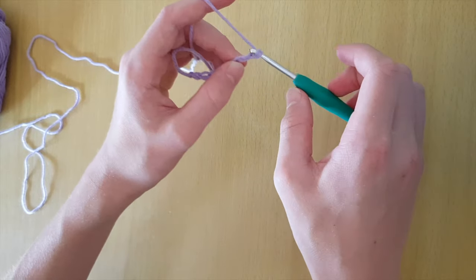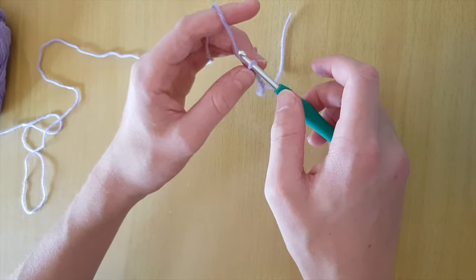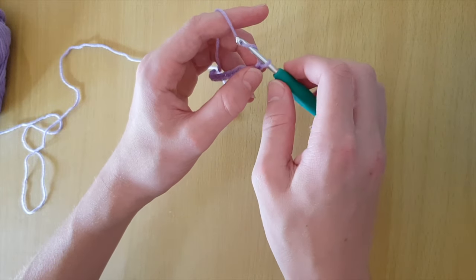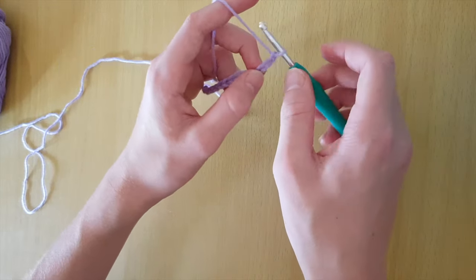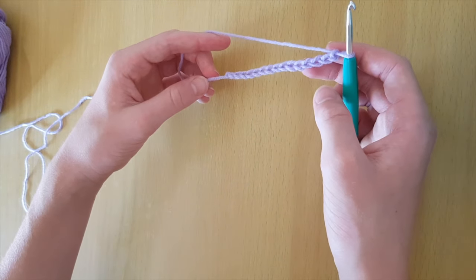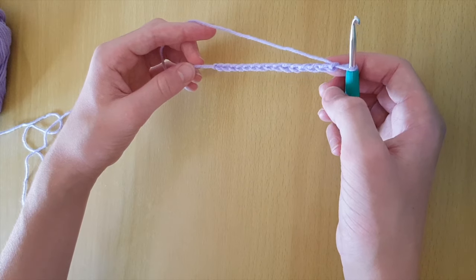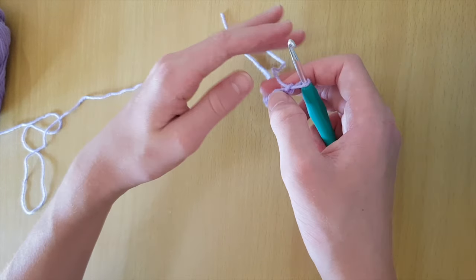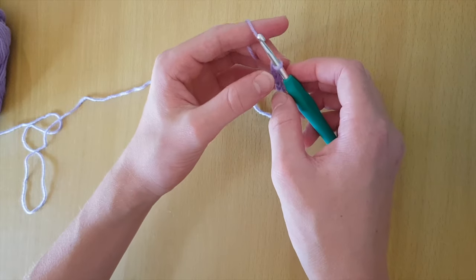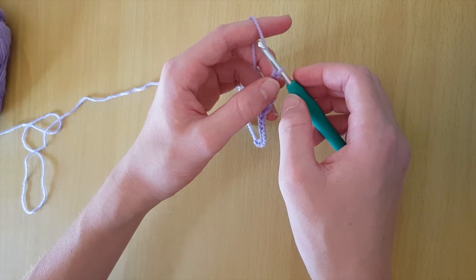Keep on chaining until you have 15 chains. I'm just going to quickly finish up my chains and then I will be ready to start the single crochet stitch. Alright, I now have my chain of 15. You are in fact going to need a turning chain of 1, so just chain 1 extra.